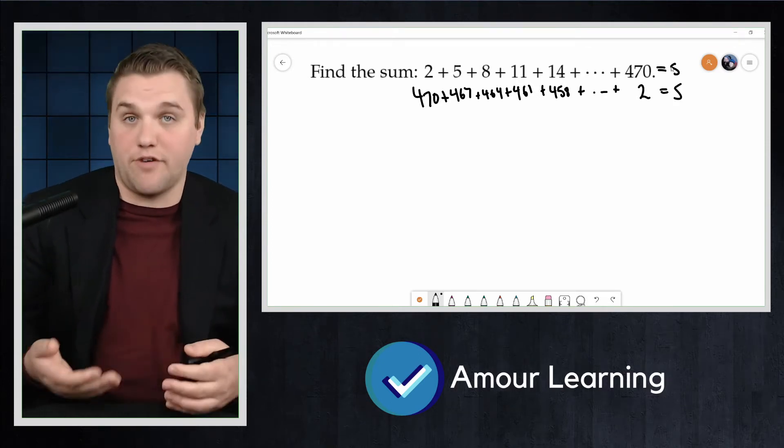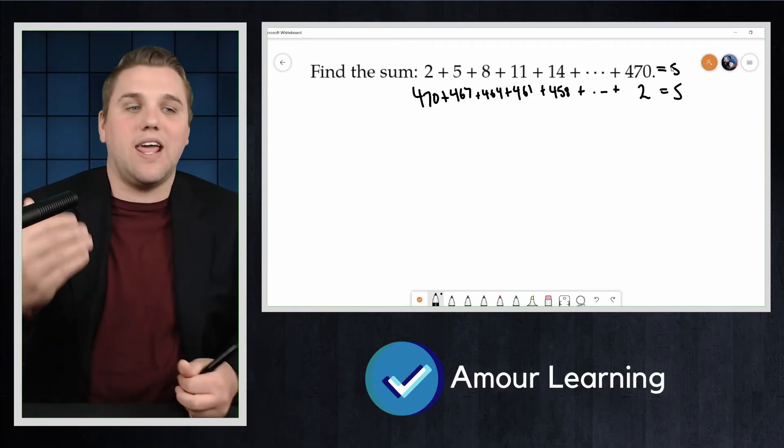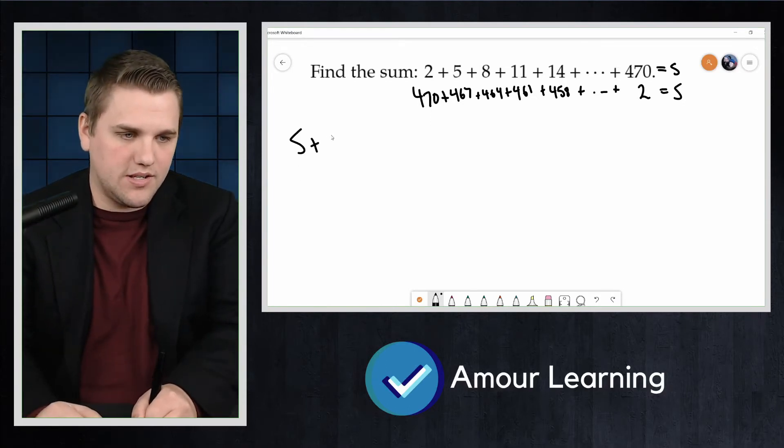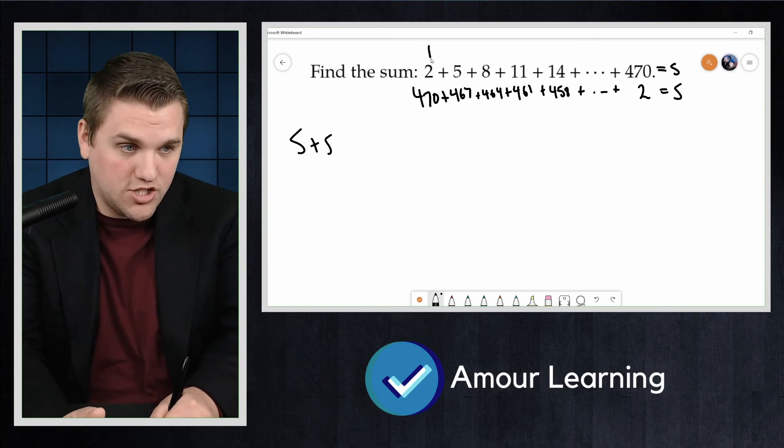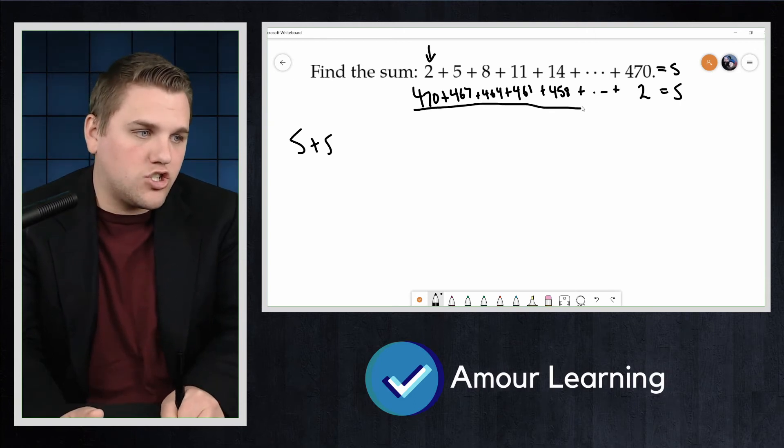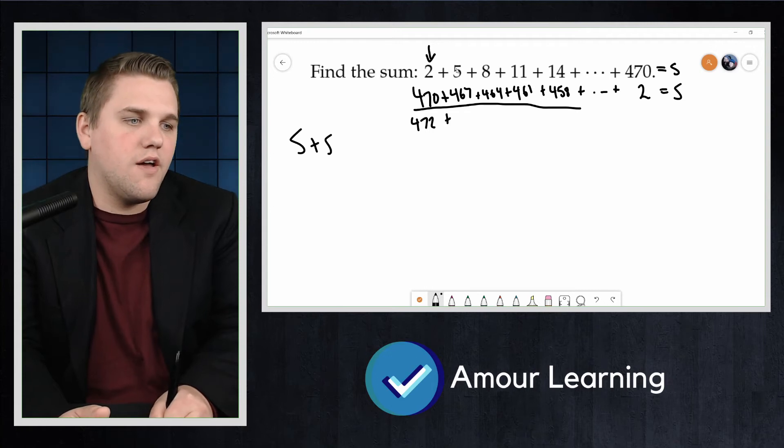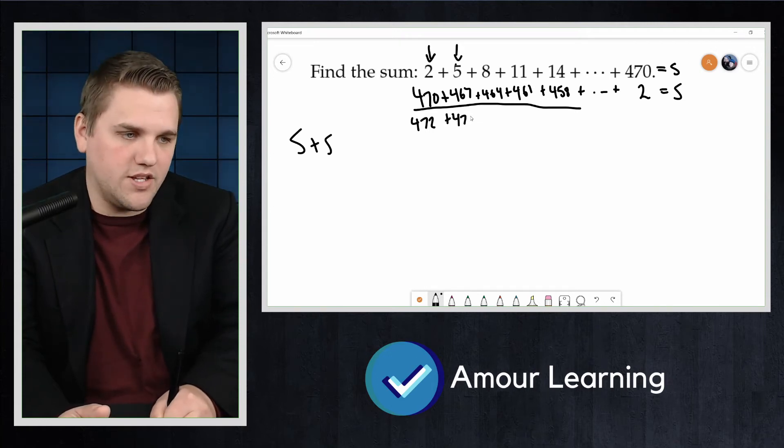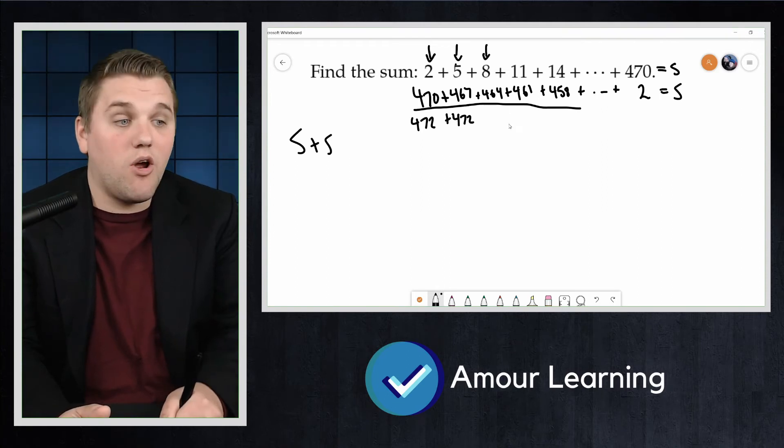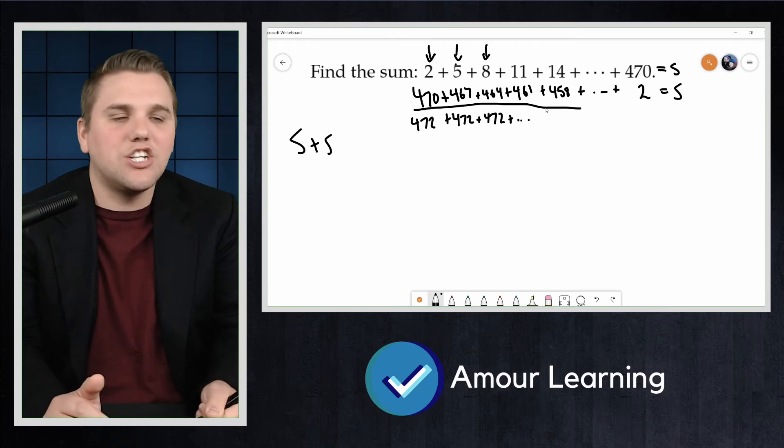They're both s but written in different ways, and now we're going to add s with s. We're going to do so vertically because you'll notice something really cool here. 2 + 470 is 472. 5 + 467 is 472. 8 + 464 is 472. You'll notice that each of these terms is 472.